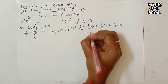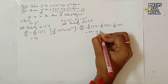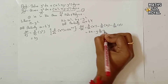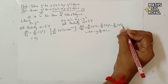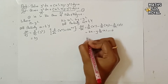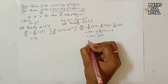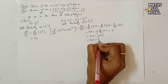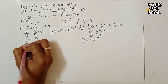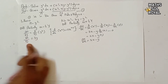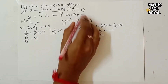Then ∂/∂x(x²) = 2x, minus y times ∂/∂x(x) = 1, and ∂/∂x(y²) = 0 since y² is constant with respect to x. So ∂N/∂x = 2x - y. Since ∂M/∂y ≠ ∂N/∂x, equation 1 is non-exact.